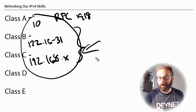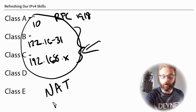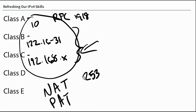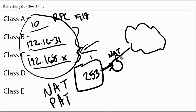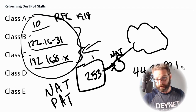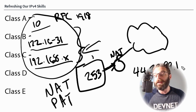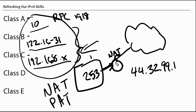These private addresses are not routable on the internet, and that's where we have to bring NAT or PAT into play. If I have 253 privately addressed devices in my enterprise and they need to reach the internet, but the internet doesn't accept 192.168, 172.x, or 10.x addresses — how do we get those devices online? That's where network address translation comes in. As devices talk to the router, it translates their internal address into a publicly routable address like 44.32.99.1. The router maintains session knowledge so that when reply traffic comes back, it gets translated back into the network.